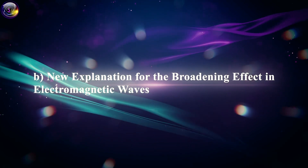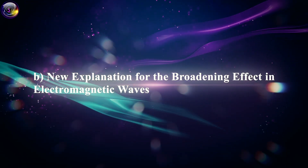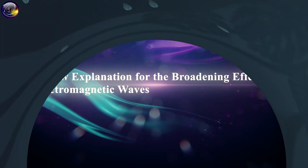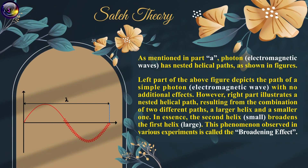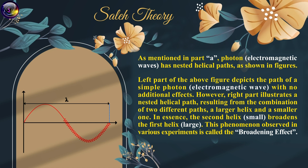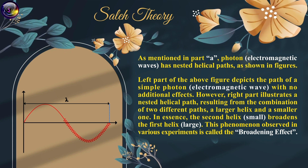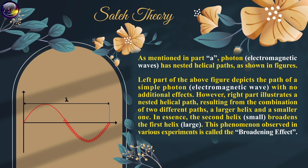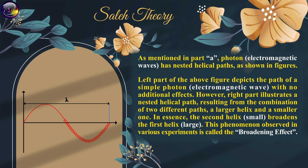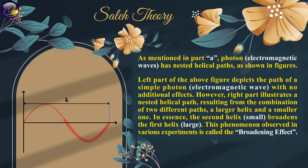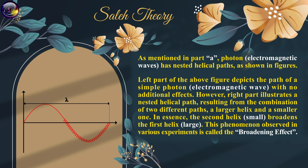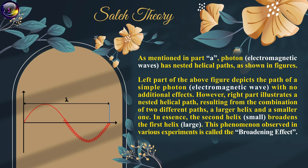A new explanation for the broadening effect in electromagnetic waves: as described, photon electromagnetic waves follow nested helical paths. The left part of the figure depicts the path of a simple photon with no additional effects, while the right part illustrates a nested helical path resulting from the combination of a larger helix and a smaller one. In a sense, the second (small) helix broadens the first helix. This phenomenon, observed in various experiments, is called the broadening effect.